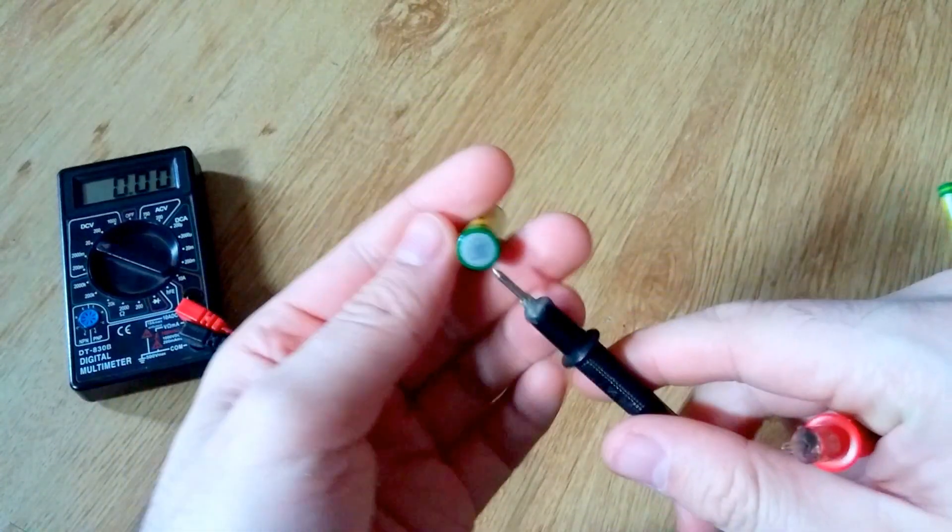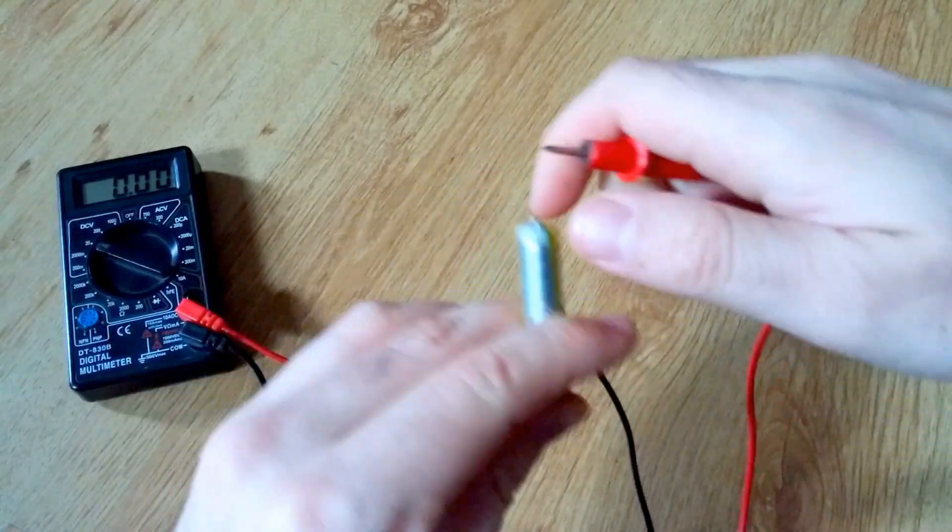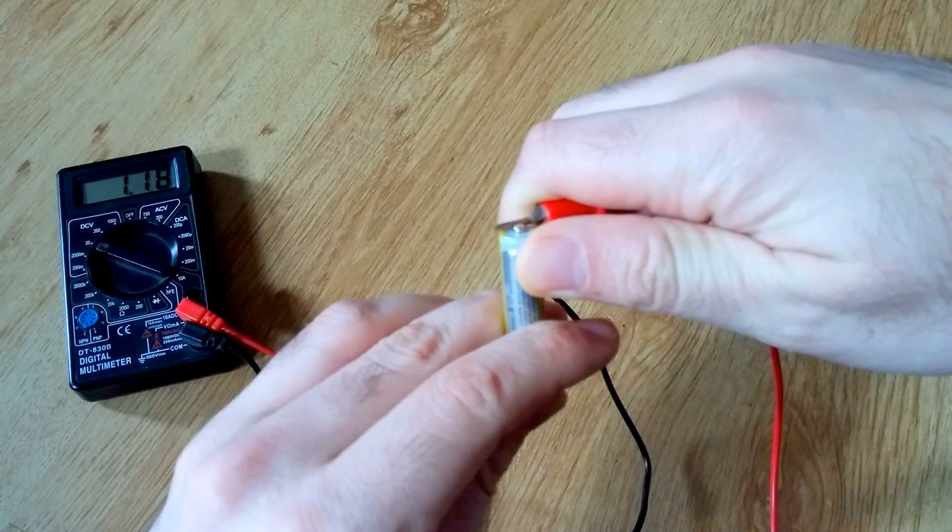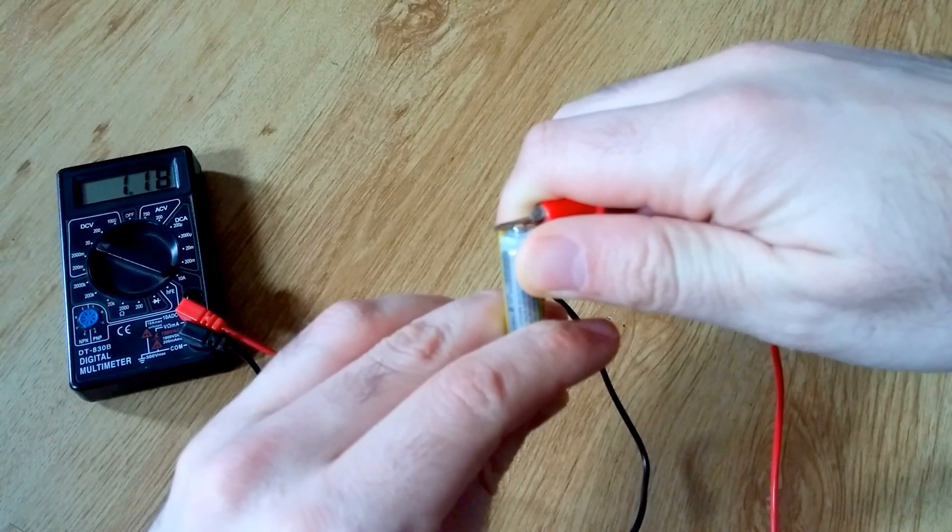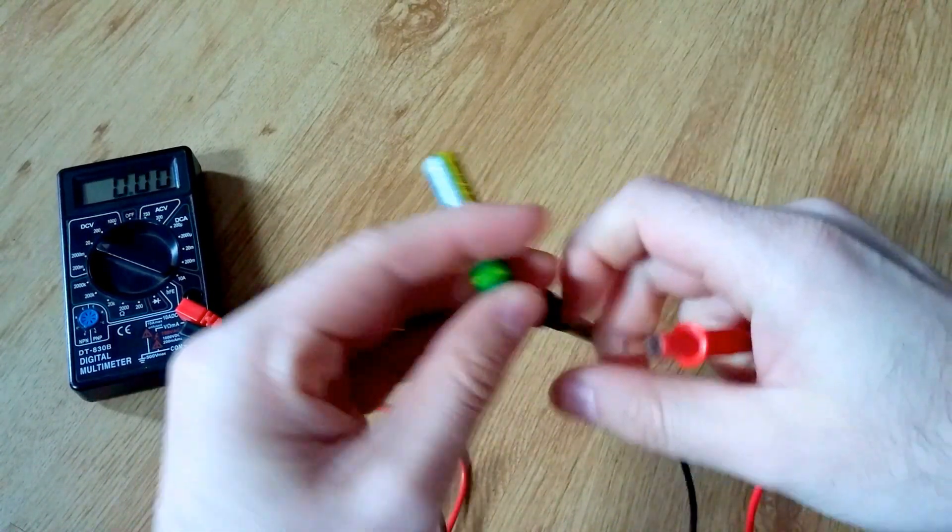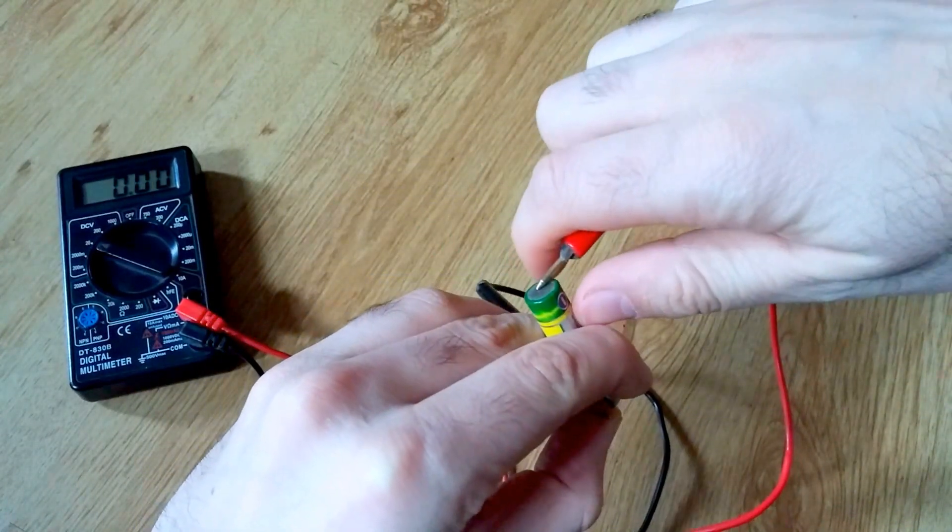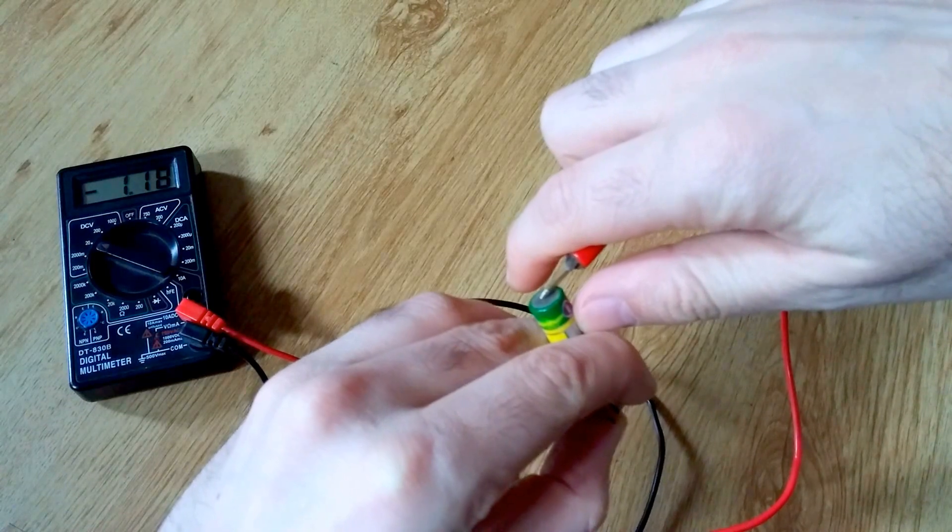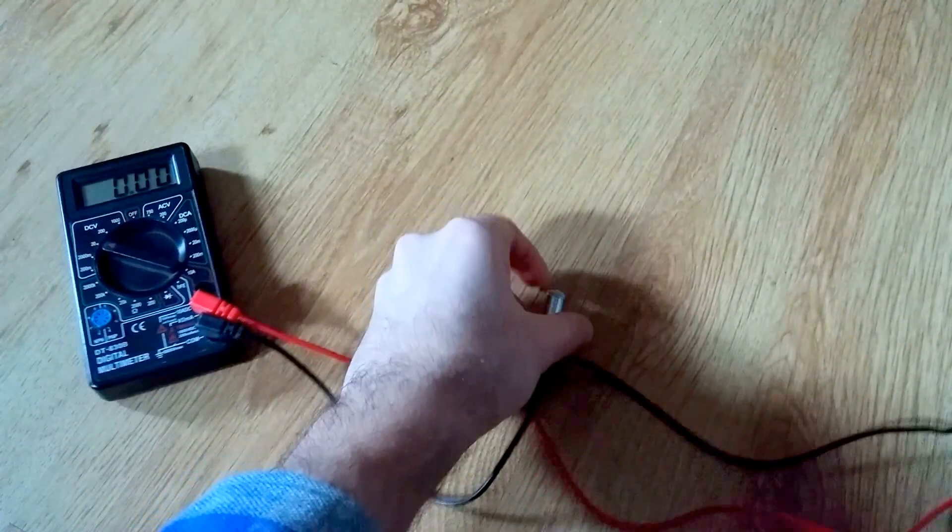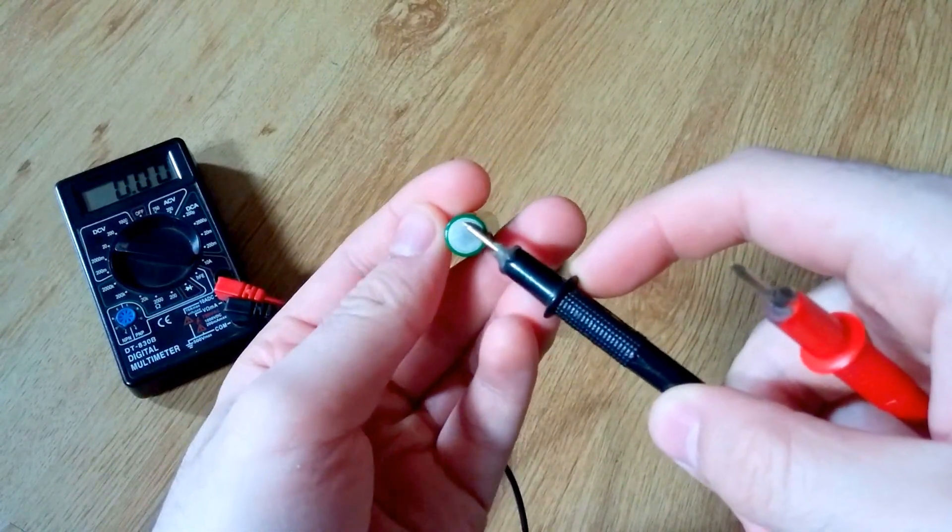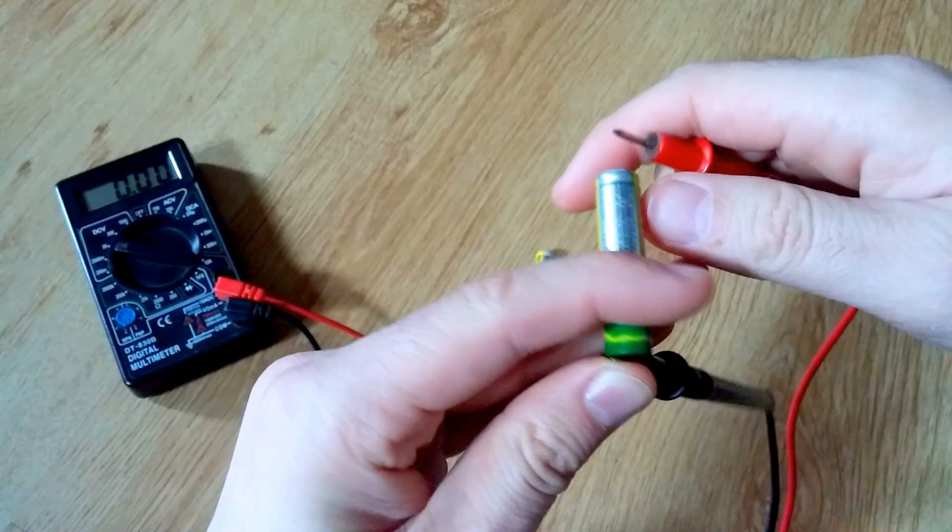And if I measure this one, this one is normal, positive 1.18 volts. Now I reverse it, now it's negative, it's reversed. But this one, it's very strange. Minus to minus and plus to plus and the voltage is negative.